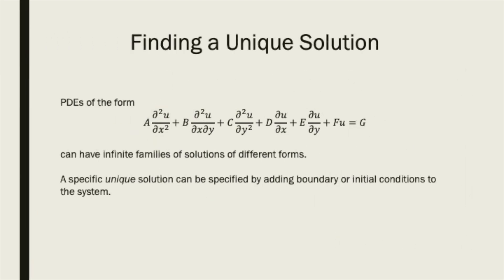We have shown in past examples that second order linear PDEs can have infinite families of solutions, each with different forms and containing different free parameters. When applying these equations to model a physical system, we would like the resulting solution of our model to be unique, otherwise it would be impossible to apply this result for physical prediction or engineering design.